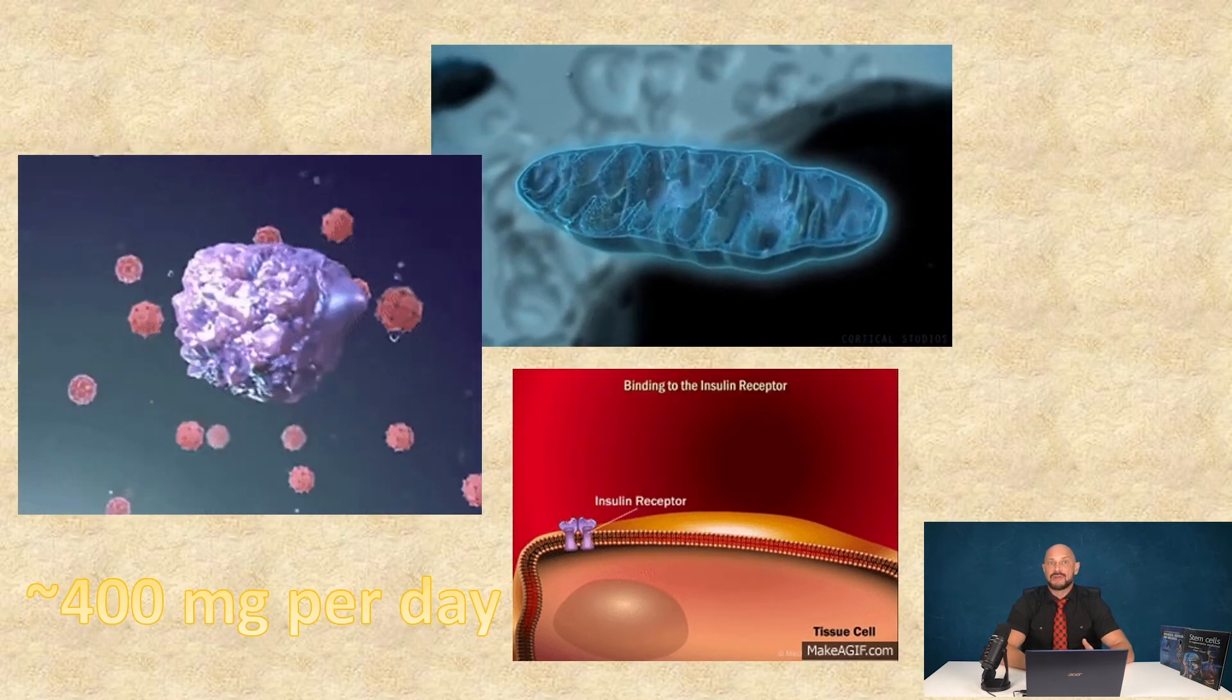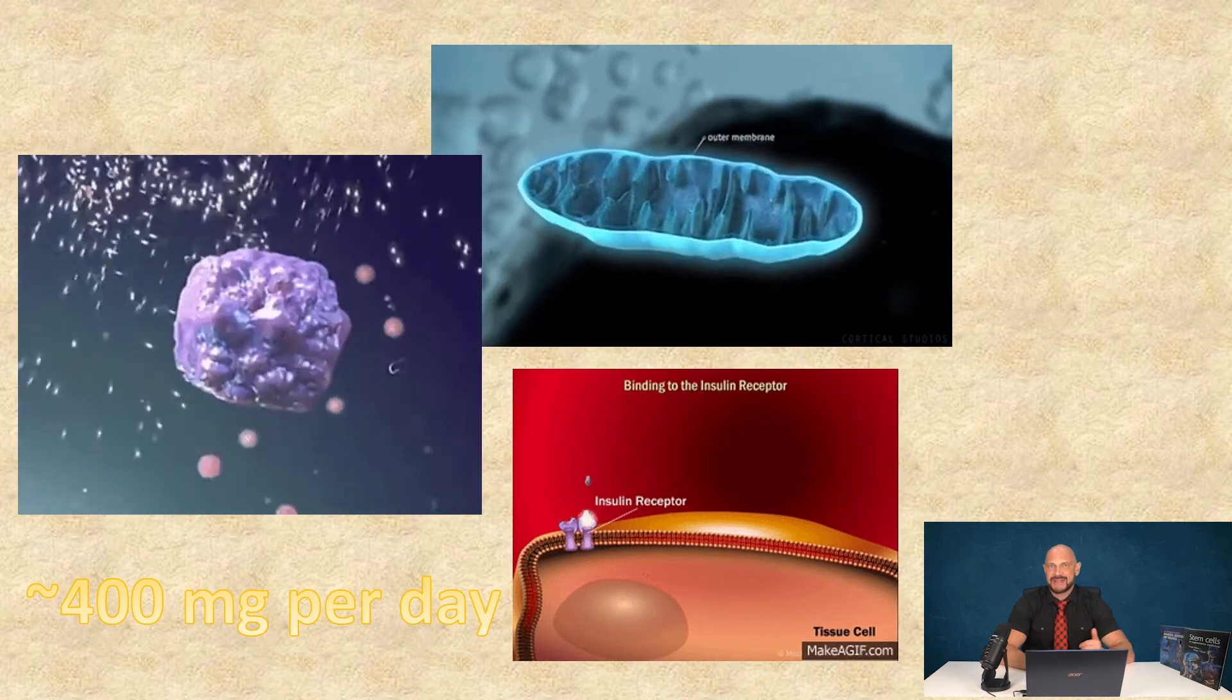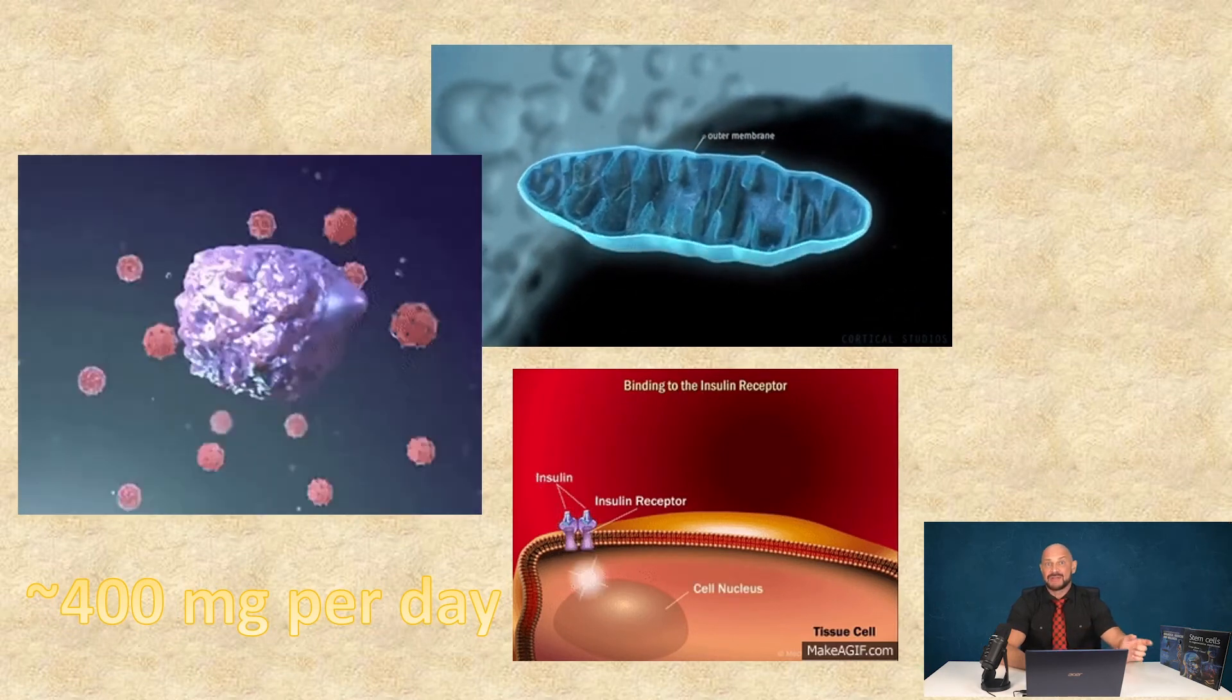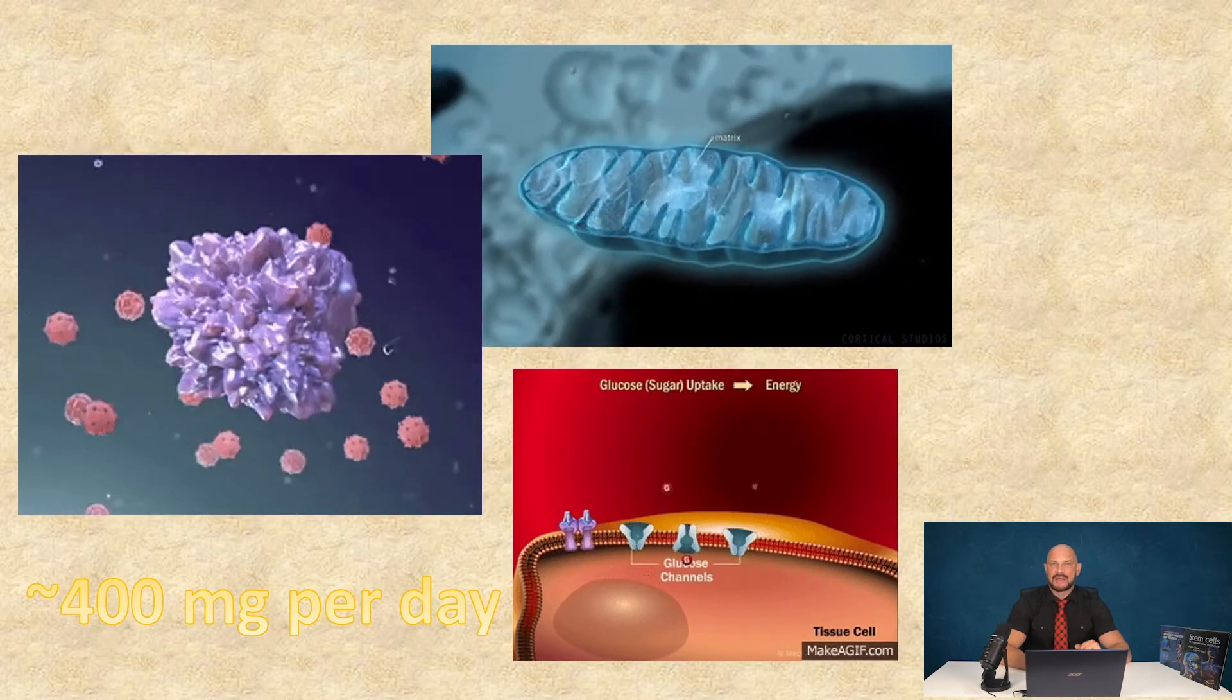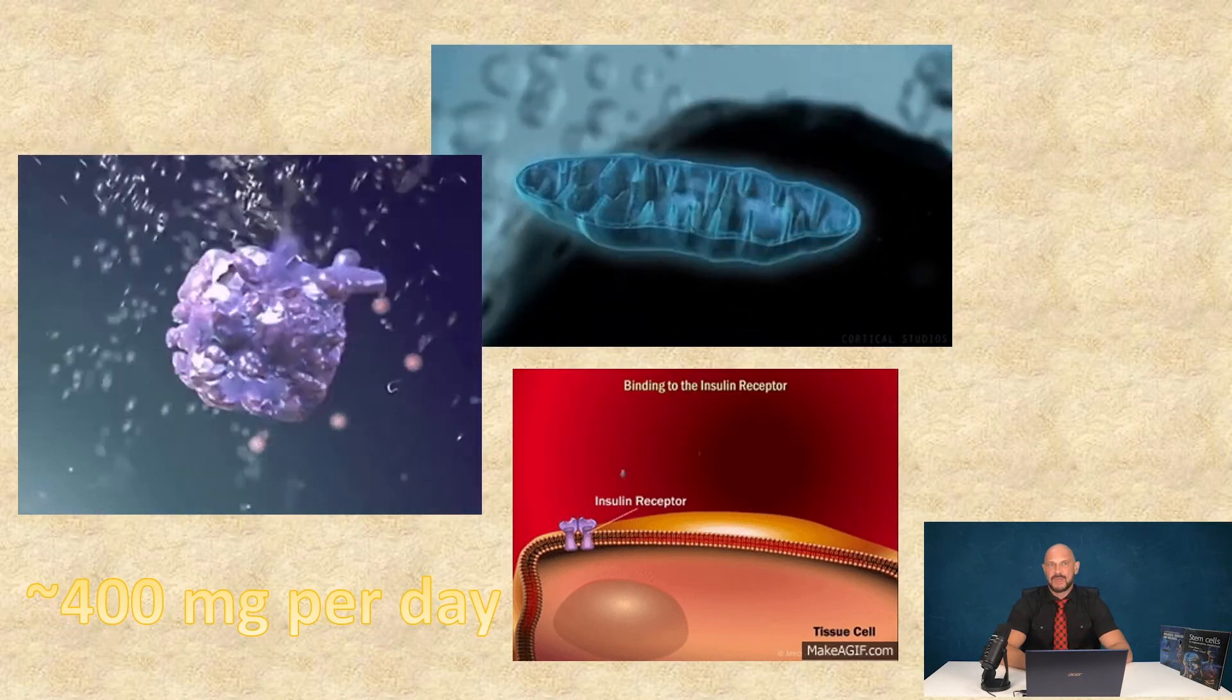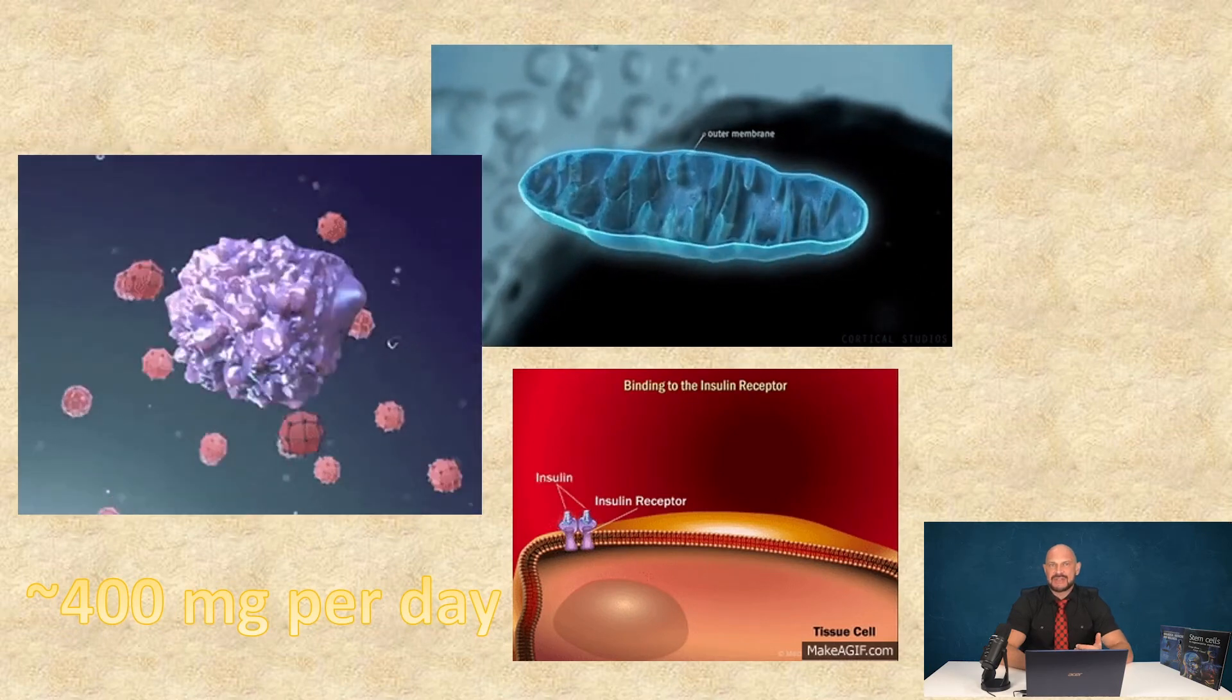Magnesium is also regulating insulin production, insulin sensitivity, and insulin transport through the cellular membrane and in different organelles inside the cells to meet the average daily requirement.